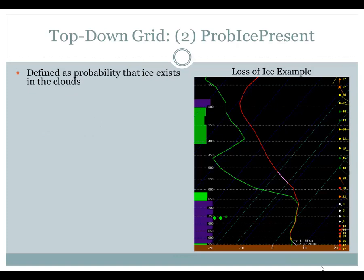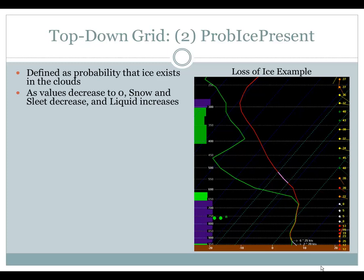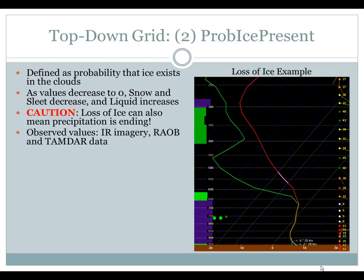The next grid of the top-downs is Prob Ice Present. This is defined as the probability that ice exists in the clouds — not that ice exists at the surface or ice accumulation — just the probability that ice exists in the clouds. Looking above minus 8 Celsius, the general beginning of the ice production zone, it's pretty dry. As values for Prob Ice Present decrease to zero, snow and sleet will decrease and liquid will increase. Note with caution: the loss of ice can also mean precipitation is ending. This is why with Forecast Builder and the GFE procedure, you don't get Prob Ice Present grids auto-produced, because you could end up with a high amount of false alarm freezing rain. When using this grid, make sure that you are actually producing precipitation.